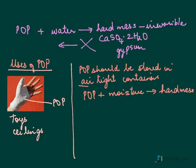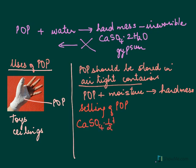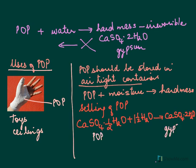Let us revisit the setting reaction of POP. POP is CaSO4·½H2O, and it reacts with one and a half molecules of water to give CaSO4·2H2O. This is how the hard mass is formed — POP (plaster of Paris) sets to give gypsum.